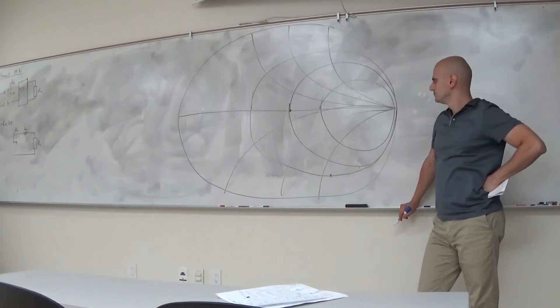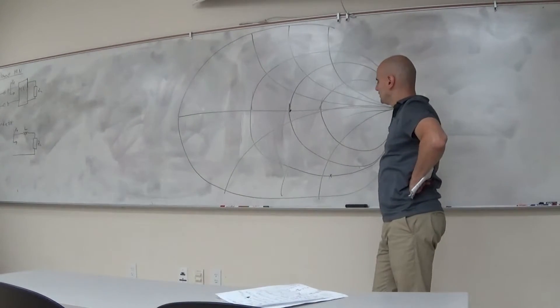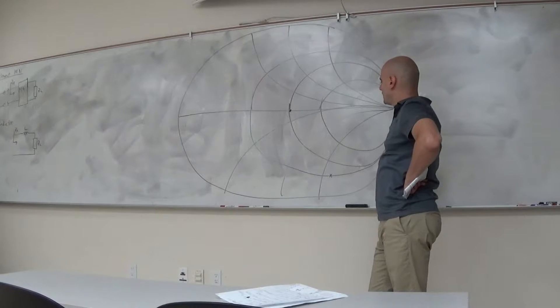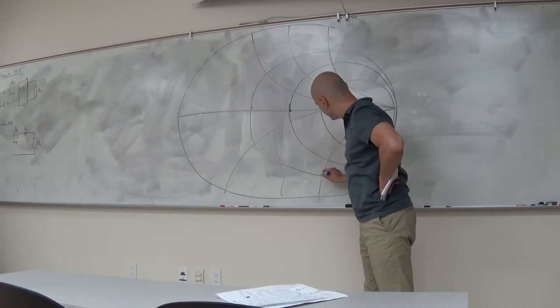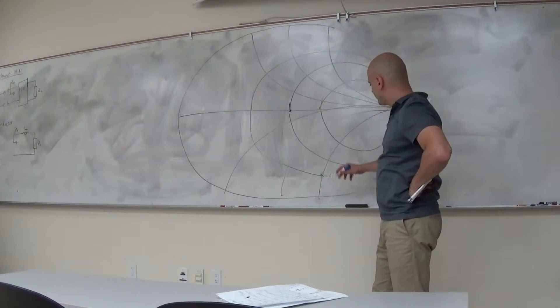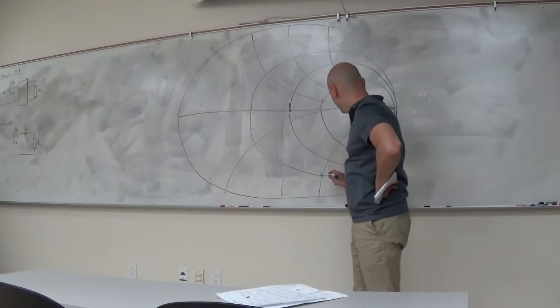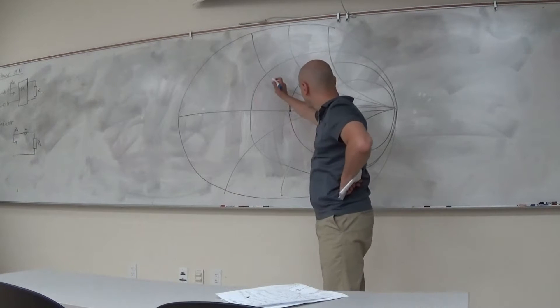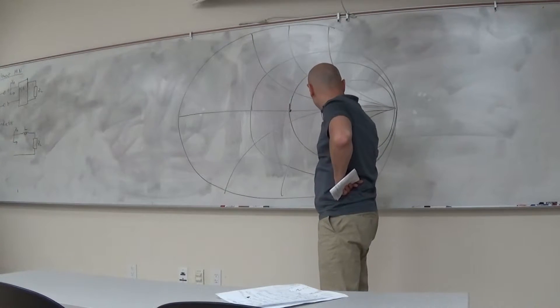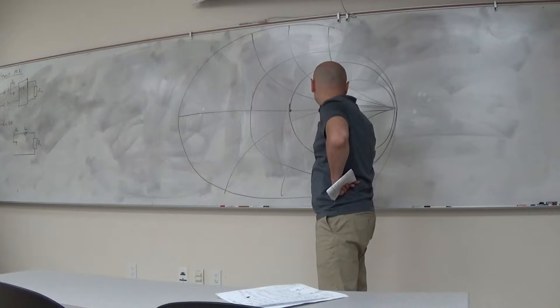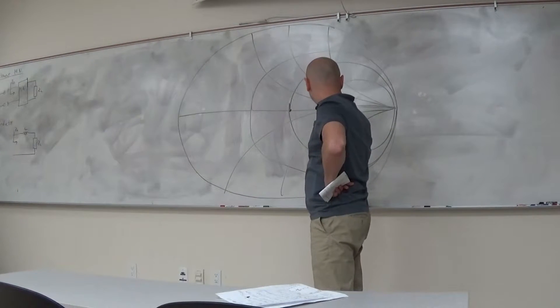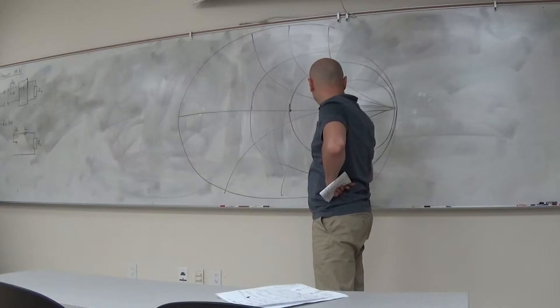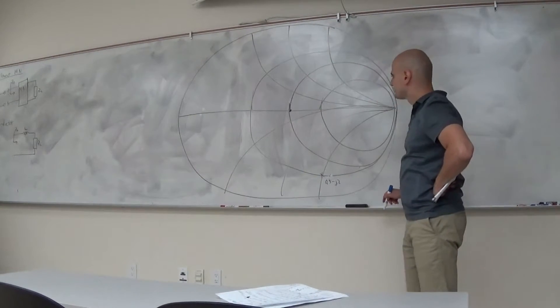It rotates it clockwise on the constant R circle. Let's actually say that I'm right here. What is my impedance at this point? This is the R equals 0.5 circle, so this is 0.5. And this is my X equals minus 2 circle, so this is minus j2. So that's my impedance.